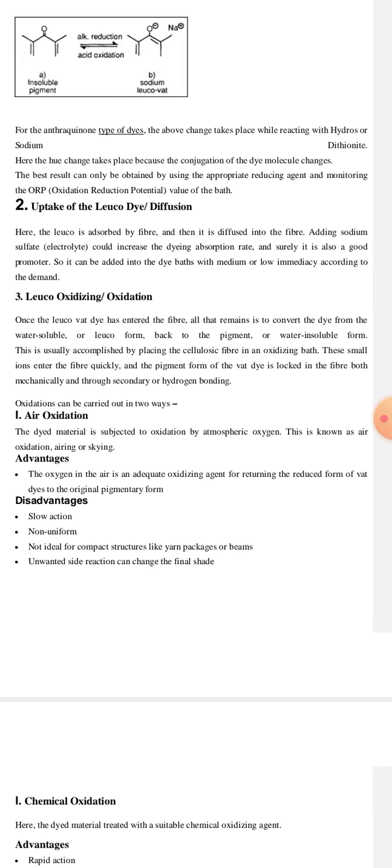The second step is uptake of the leuco dye or diffusion. In this step, leuco is absorbed by the fiber and then it is diffused into the fiber. Adding sodium sulfate, which is an electrolyte and promoter, could increase the dye absorption rate. It can be added into the dye bath with medium or low immediacy according to the demand.